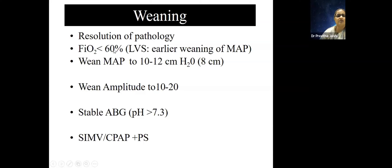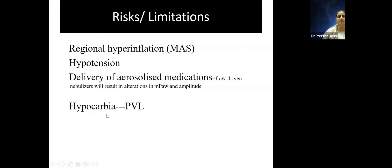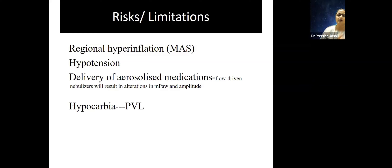For weaning: once FiO2 is less than 60% and the pathology is resolving, you can start weaning. Wean MAP down to 10–12, wean amplitude to around 20, ensure stable gases. Some risks I have faced with HFO: the ventilator not working for a particular child — some babies worsen and you may have to return to conventional quickly. Also, if you use HFO without properly recruiting the lung on conventional first, you won't get extra benefit, and nitric oxide also won't work well. Recruiting adequately on conventional before switching to HFO is important.